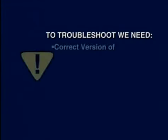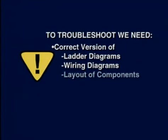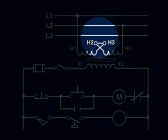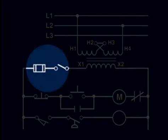Troubleshooting a control circuit may not be as complicated and difficult as it might appear at first glance, as long as we keep our technique according to a step-by-step procedure. First of all, we need to have an updated and correct version of ladder diagrams, wiring diagrams, and the layout of components in the enclosure, including the terminal locations which are connected to devices. If we don't start by having this, our task will be much more difficult, perhaps by a factor of 100 or more.